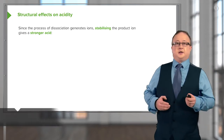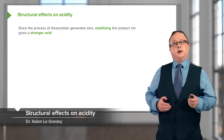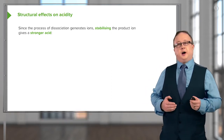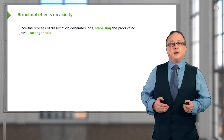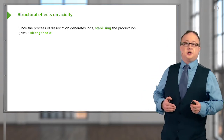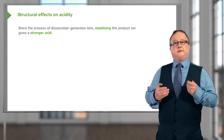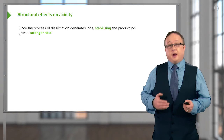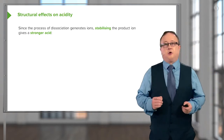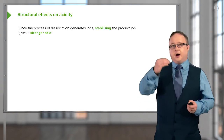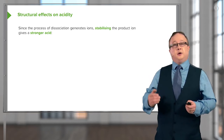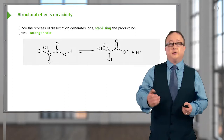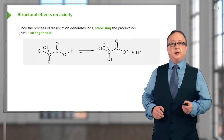The structural effects on acidity relate to the concepts of electronegativity and inductive effects, which we covered back in module one. Since the process of dissociation generates ions, there is an advantage to stabilizing the product ion to give a stronger acid, if indeed that is what you require. We talked about introducing more electronegative atoms onto less electronegative atoms — an example being chlorine attached via a sigma covalent bond to a carbon.